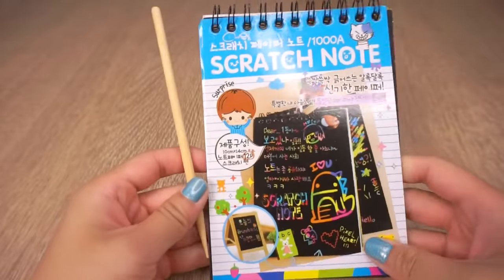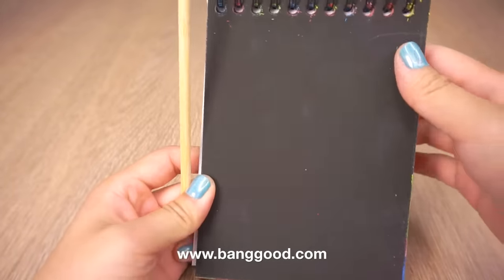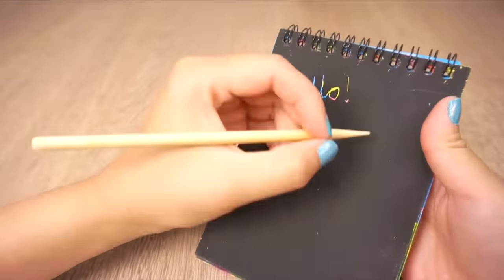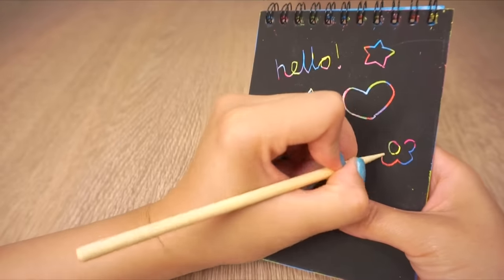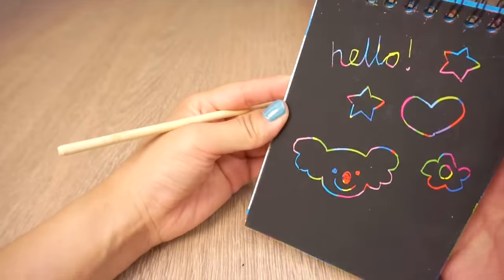So back to the notebook. I was inspired by this Korean scratch-off notebook that I got from banggood.com which I've also linked below. It comes with this wooden stick for you to scratch off designs however you can also use an empty ballpoint pen, a cuticle stick or any other pointy tool.